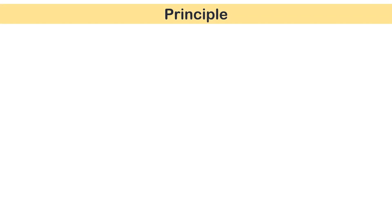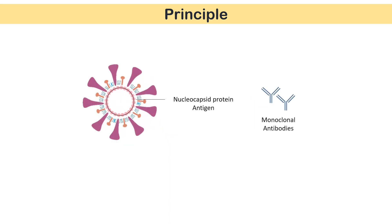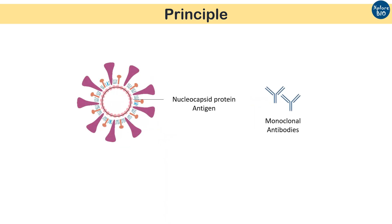Most rapid antigen kits target SARS-CoV-2 nucleocapsid antigens using specifically developed monoclonal antibodies. The monoclonal antibodies identify only a specific epitope of the nucleocapsid antigen, thus increasing the specificity of detecting novel coronavirus.